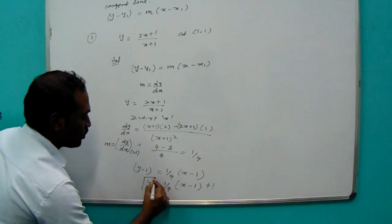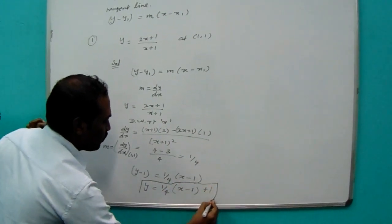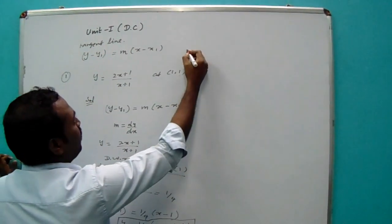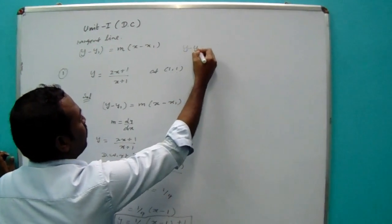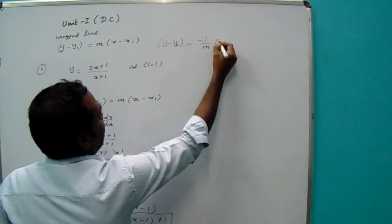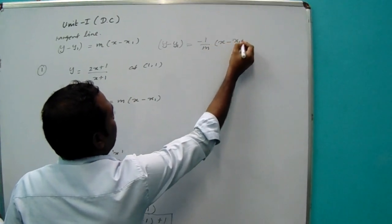This is the tangent line. The normal line will be found using y minus y1, minus 1 by m into x minus x1. This sum you will solve.